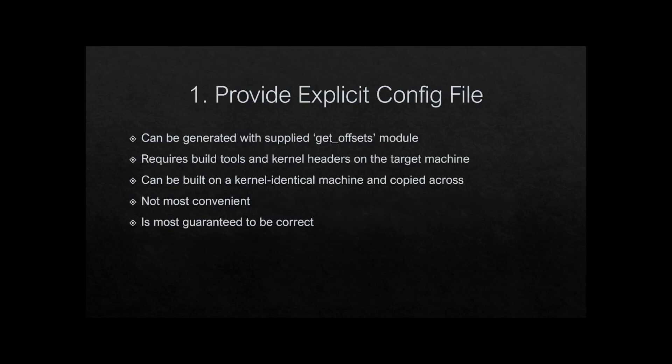When libsysinternals eBPF starts up, the first thing it does is look for a configuration file containing these offsets — if present, it uses that. These offset files can be generated using the getoffsets module that comes with libsysinternals eBPF, which is guaranteed to provide the absolute correct offsets. This is mainly a fallback mechanism. If the offset file is there it's used first, because it's considered that you've decided the other methods won't work and are forcing a particular set of offsets.